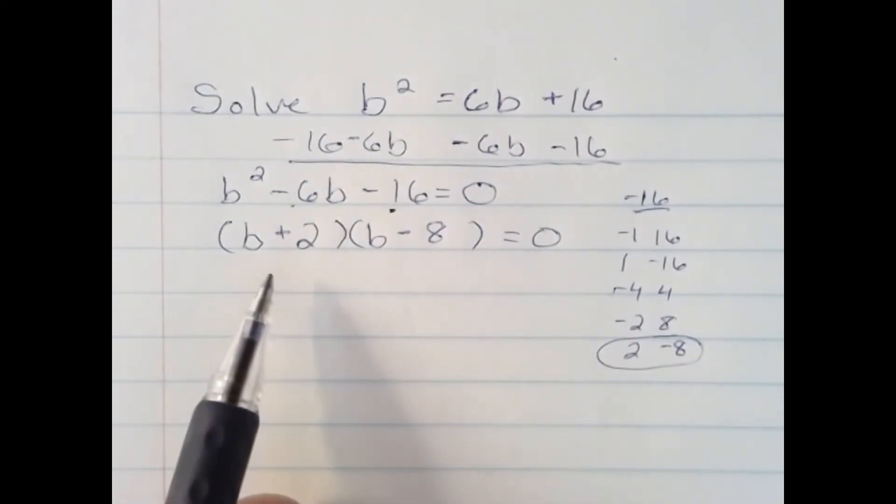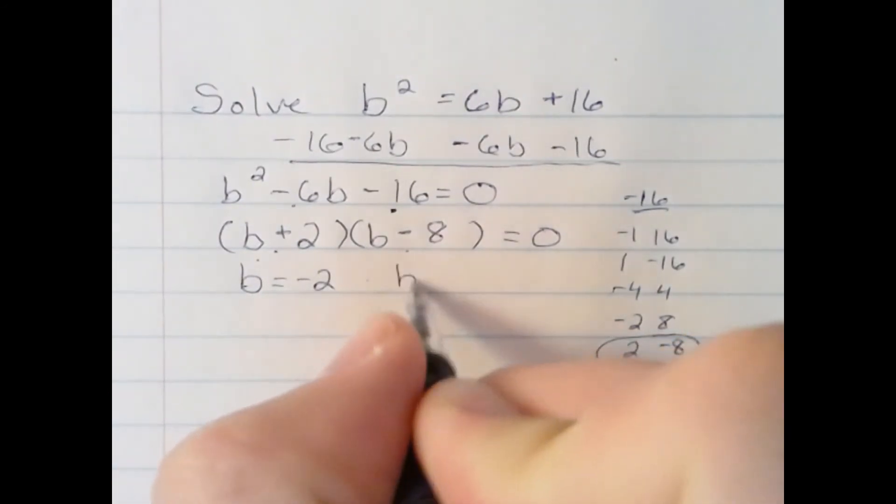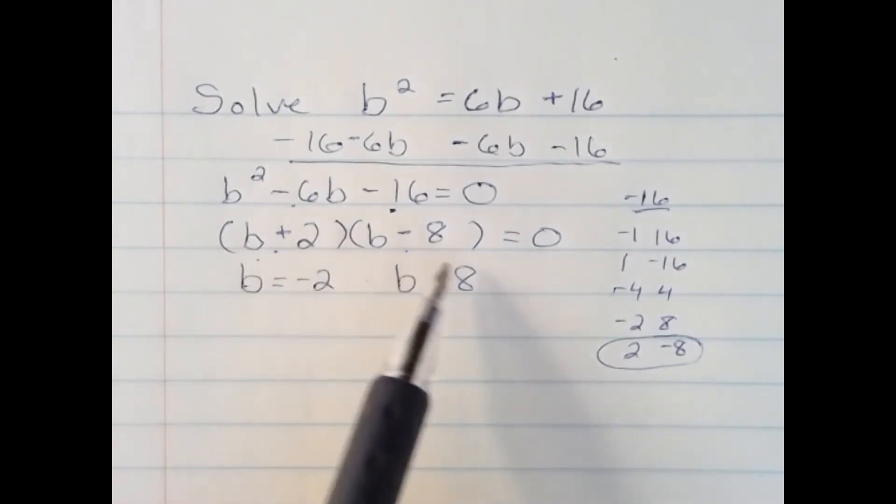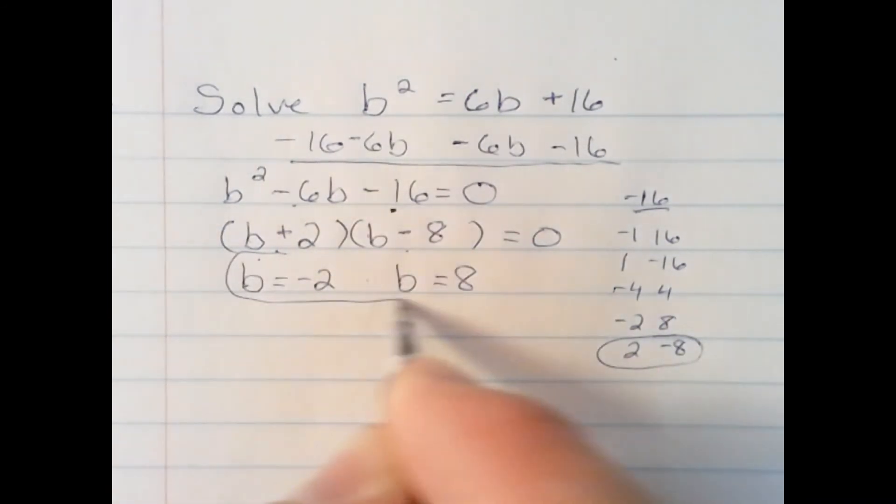I can now go and solve each of these terms by setting them equal to 0. This gives me b equals negative 2. This gives me b equals 8. Because negative 2 and 2 makes 0. 8 minus 8 makes 0. And these are my two answers.